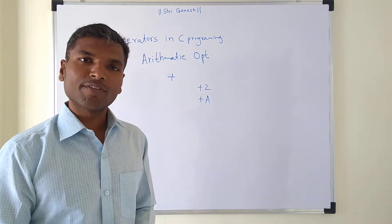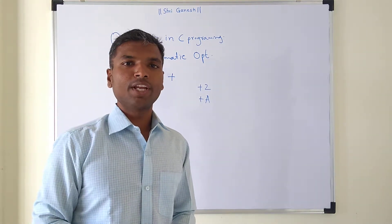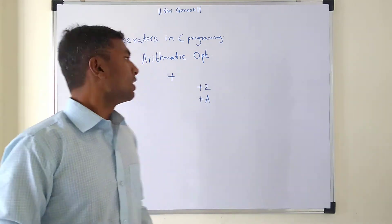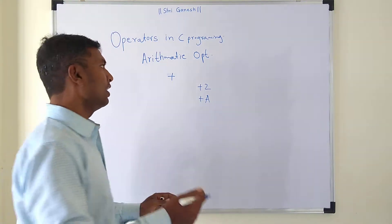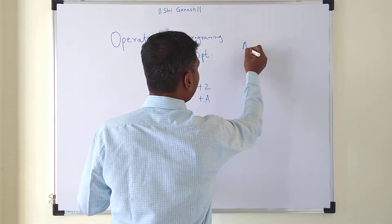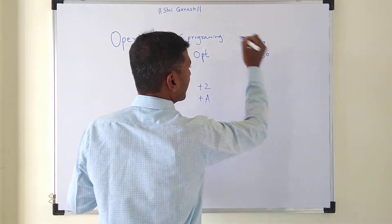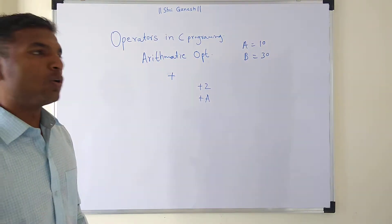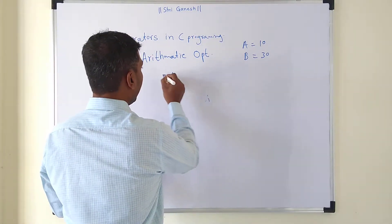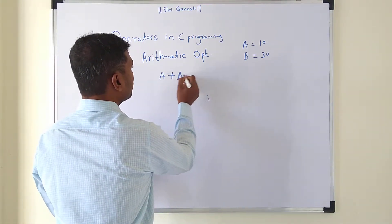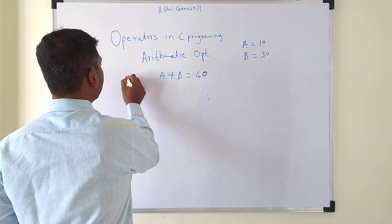The unary operator means the operator which can be used with a single operand. This plus is also useful for doing the addition of any two numbers. We will take an example: if a is equal to 10 and b is equal to 30, and I want to do the operation a plus b, the answer will be 40. So this is the use of the plus operator.